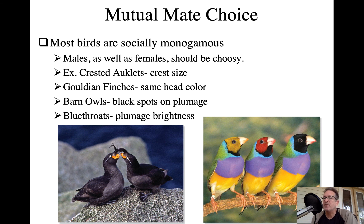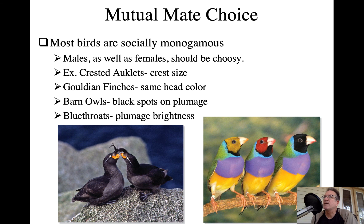Gouldian finches show mutual bright coloration and positive assortative mating by plumage pattern, choosing individuals with similar head patterns. Barn owls show mutual attention to black spots on plumage. In these species, the highest quality male tends to mate with the highest quality female — called positive assortative mating — and pairs form down the quality gradient from there. This pattern is typical in socially monogamous birds, which represent most avian species.